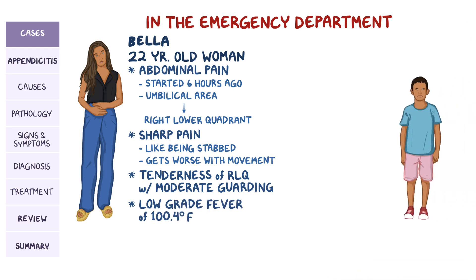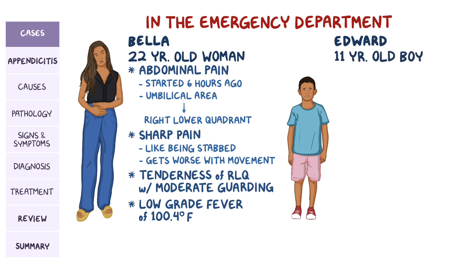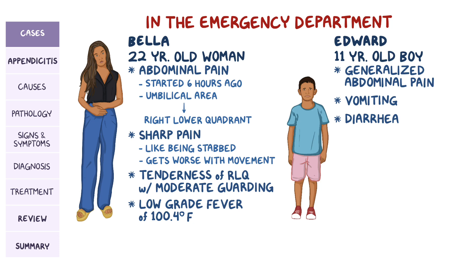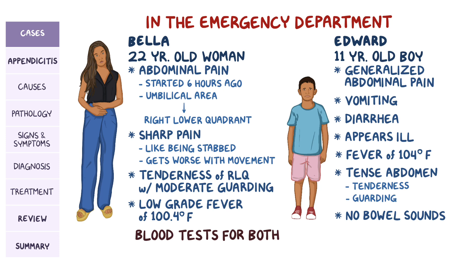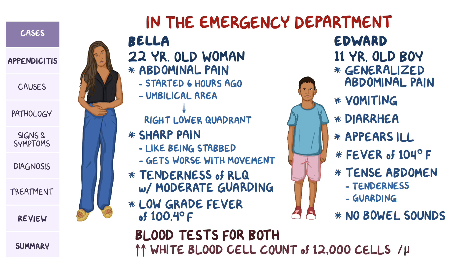Shortly after, Edward, who's 11, presents with generalized abdominal pain, with vomiting and diarrhea. On examination, he appears ill and has a temperature of 104 degrees Fahrenheit. His abdomen is tense, with generalized tenderness and guarding. No bowel sounds are present. Blood tests were ordered in both cases, detecting an increased white blood cell count of 12,000 cells per microliter, with 85% neutrophils.